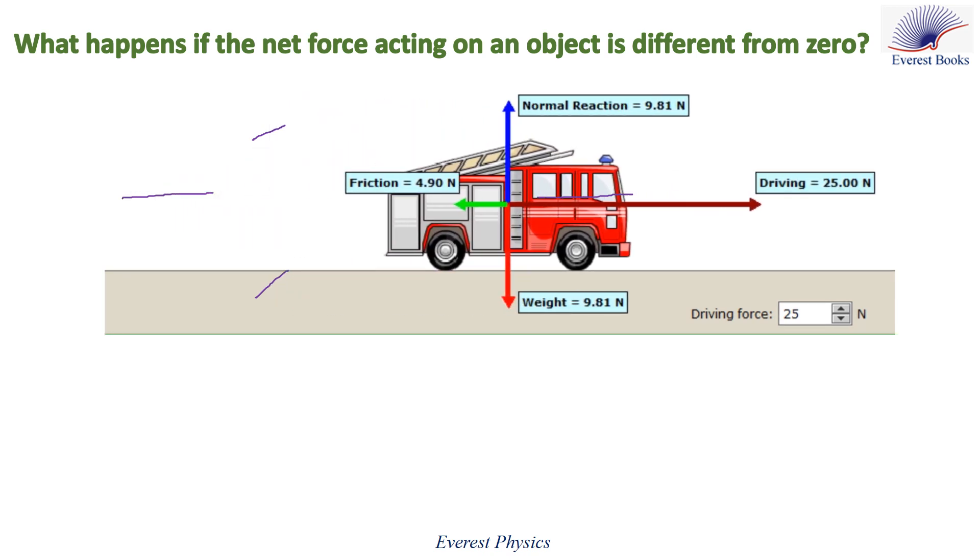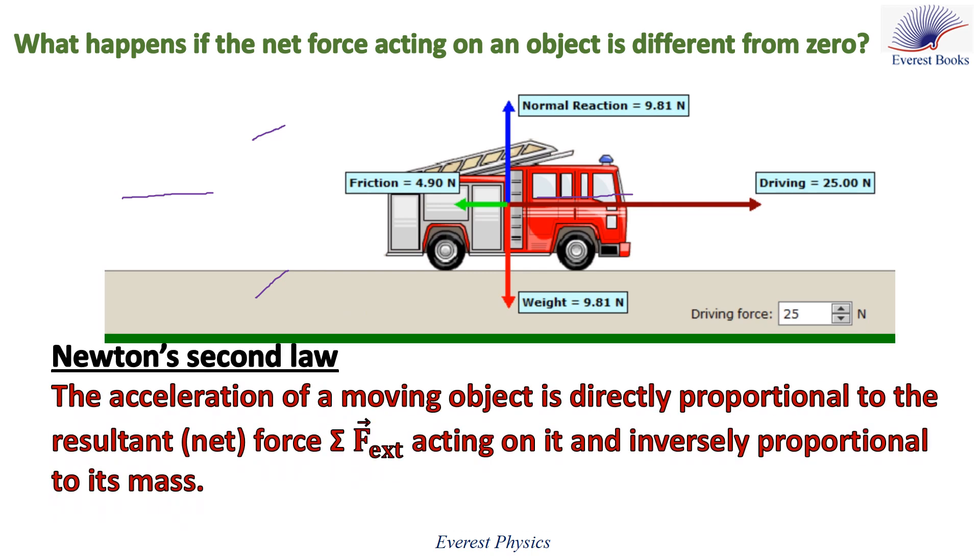Then this car moves in an accelerated motion. So Newton's second law states that the acceleration of a moving object is directly proportional to the resultant or to the net force acting on it and inversely proportional to its mass. So that sigma F external or the sum of the external forces is given by the mass of the object times its acceleration.